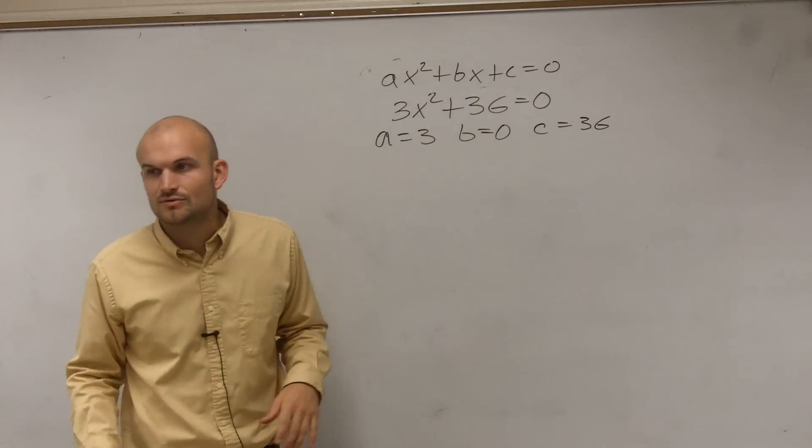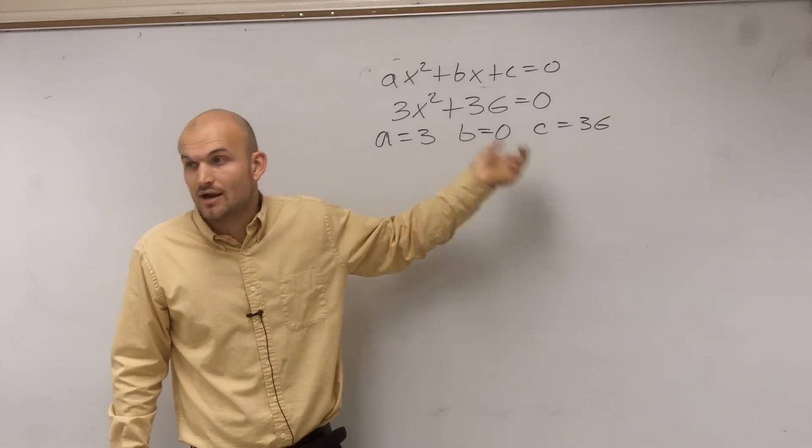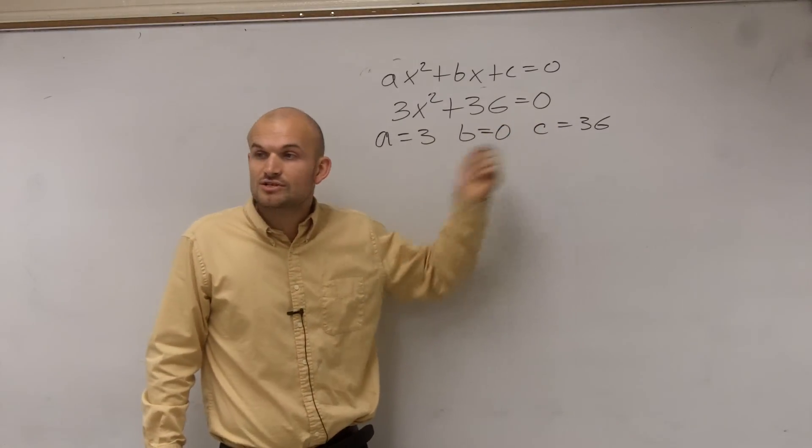Again, the reason why b equals 0 is because I don't have a value for b in there. I don't have a middle term. So therefore, b is going to be 0.